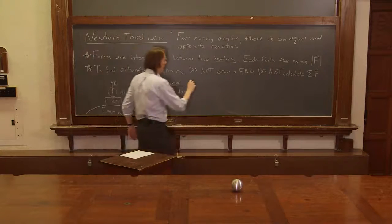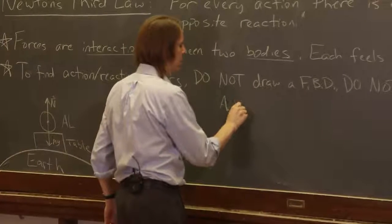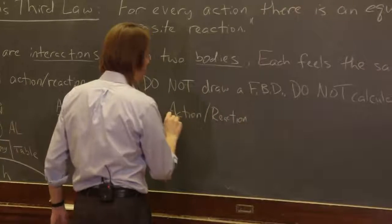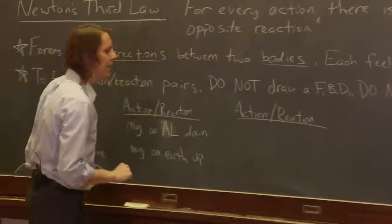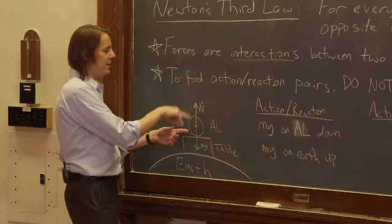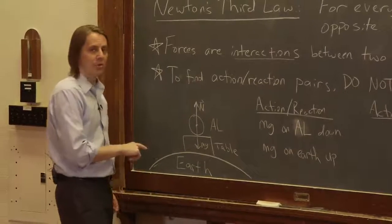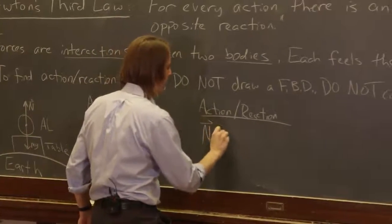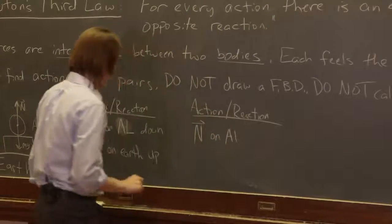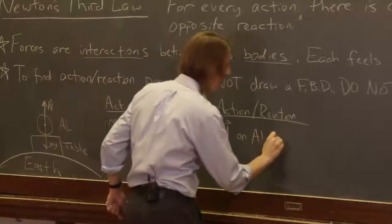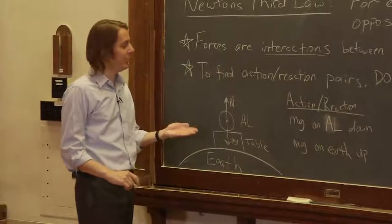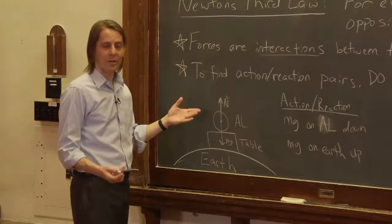Let's do another one. The other force we're used to thinking about is N, the normal force. So we have N, the normal force on Al, and it is up. It's being applied by the table. The table is applying N to Al. That identifies the pair.